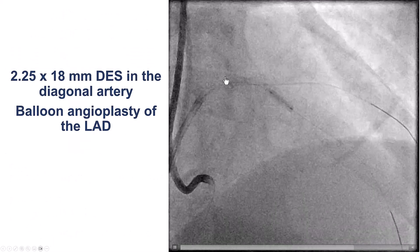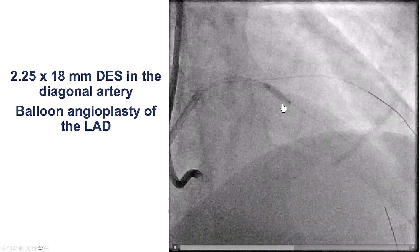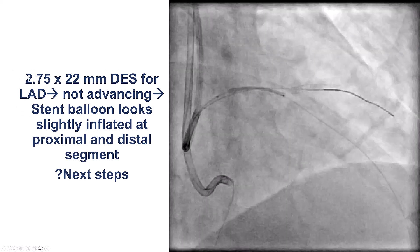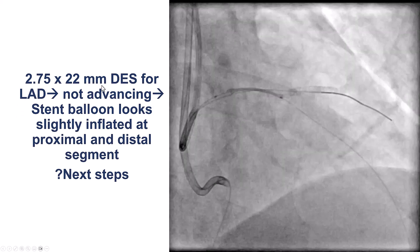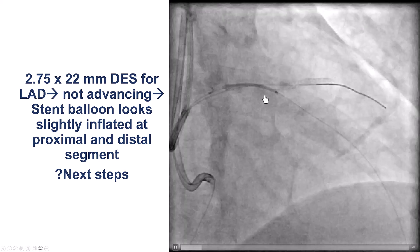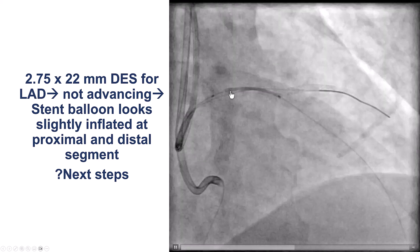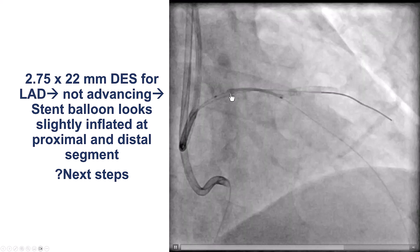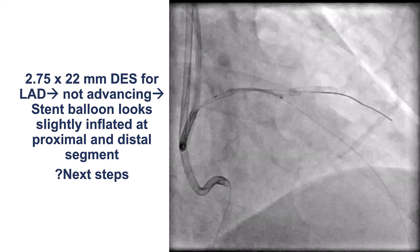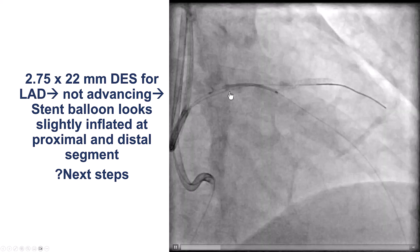We decided to first treat the donor vessel. We predilated the LAD and the diagonal and stented the diagonal, then tried to deliver a 2.75 by 22 mm drug-eluting stent in the LAD, but had difficulty delivering the stent. Looking more carefully, the proximal part of the stent was actually inflated — the endoflator was up to two atmospheres. During connection of the balloon with the endoflator, there was inadvertent inflation of the stent balloon, causing mild expansion of the proximal edge of the stent.